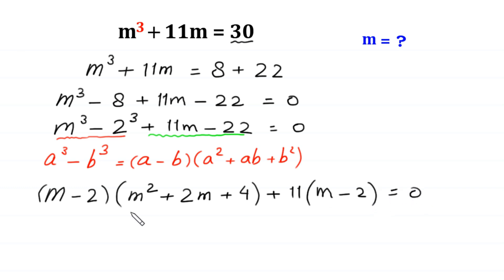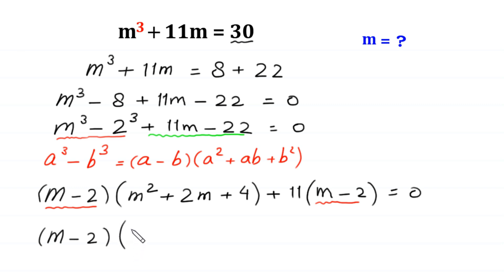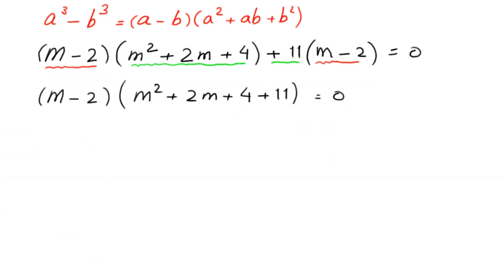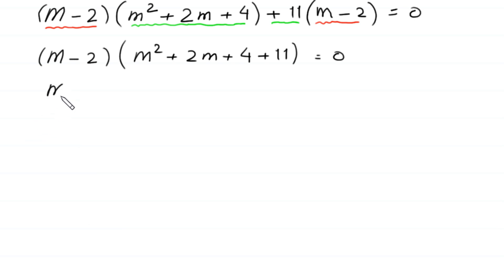Now, as you can see, the expression (m minus 2) is a common factor. So we factor out (m minus 2) as a common factor, leaving in the bracket: m squared plus 2m plus 4 plus 11, which gives us m squared plus 2m plus 4 plus 11.